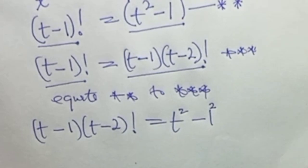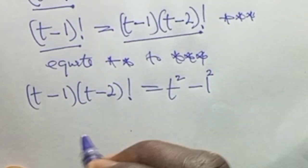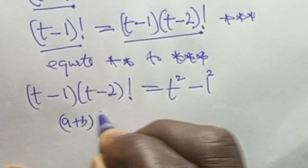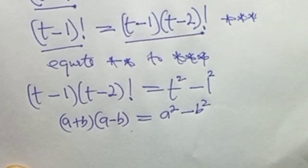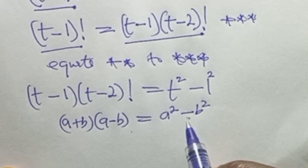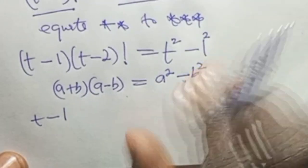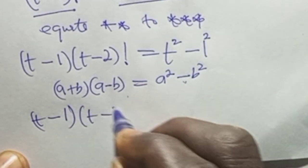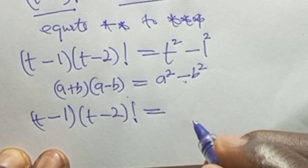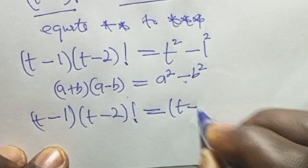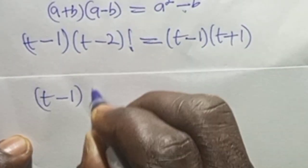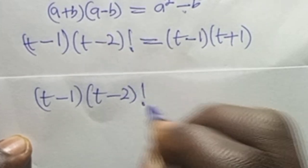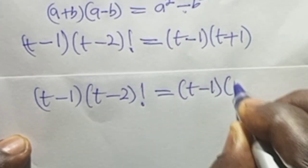We can write t squared minus 1 as t squared minus 1 squared. From algebra, (a + b)(a - b) equals a squared minus b squared, so t squared minus 1 equals (t minus 1)(t plus 1). Therefore: (t minus 1) into (t minus 2) factorial equals (t minus 1)(t plus 1).